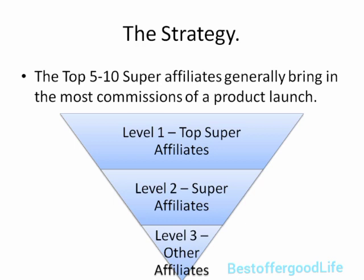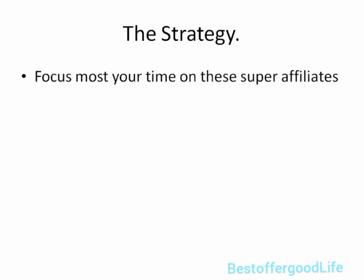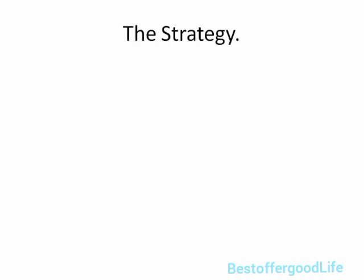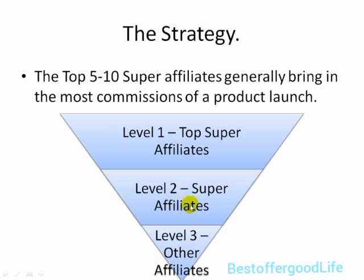The problem a lot of super affiliates face is that many of them are simply busy. A lot of them get fifty to hundreds of emails every single day from people who want them to promote their product. So how are you going to stand out from all these emails and appeal to these top super affiliates? Obviously you need to have a good relationship, but if you have a good product, that can work as well. Focus most of your time on super affiliates. There are also level two super affiliates who generate commissions, while other affiliates may never really generate any sales but can help as well.